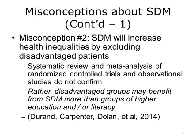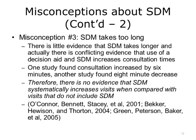Another misconception about shared decision-making is that it will increase health inequalities by excluding disadvantaged patients. There is a belief that SDM will only attract and benefit those who naturally seek out information, are educated and empowered, and able to advocate for their needs, and consequently disfavors disadvantaged patients. This is not true. A systematic review and meta-analysis of randomized control trials and observational studies show that disparities in knowledge, decisional conflict, and uncertainty between disadvantaged groups and more privileged populations tended to disappear after use of SDM interventions. Disadvantaged groups may therefore benefit from SDM interventions even more than people with higher literacy or education. In the long term, SDM may actually help to reduce health disparities.